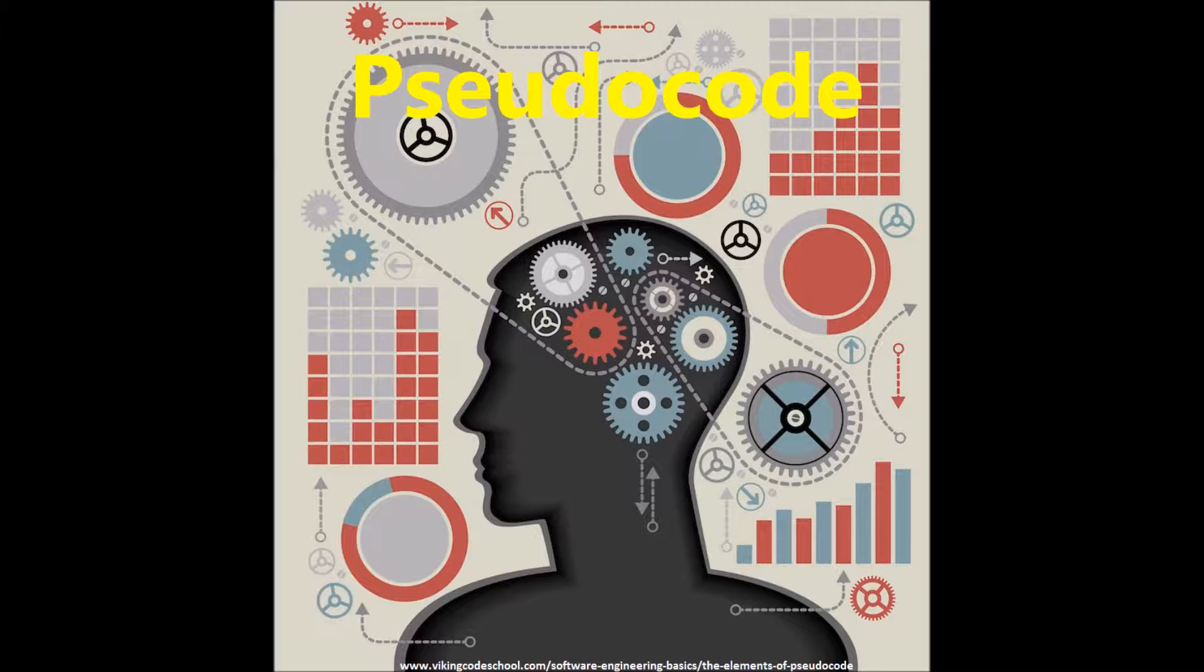What is pseudocode? Pseudocode is basically an algorithm, a series of instructions, a sequence of steps that when you follow the steps, it results in some type of output.